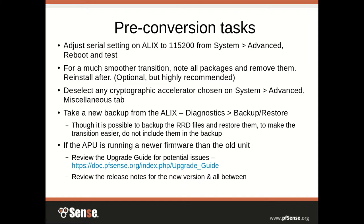If the APU is running a newer firmware and your ALIX is on something older like 2.0.3, 2.1, or even 1.2.3, make sure you review the upgrade guide at docs.pfsense.org/index.php/Upgrade_Guide. It lists all known issues with upgrading from version to version. Also review the release notes for each new version in between. If you're going from 1.2.3 all the way up to 2.1.5, take a glance at the 2.0, 2.0.1, 2.0.2, 2.0.3, 2.1, 2.1.1, and so on up to 2.1.5 release notes. You don't have to read them in depth, but it's a good idea to familiarize yourself with what has changed.